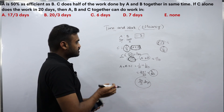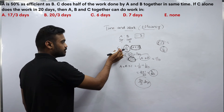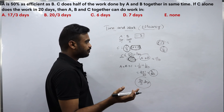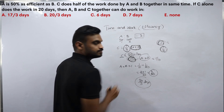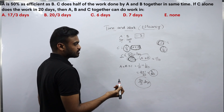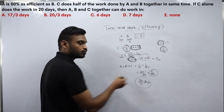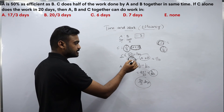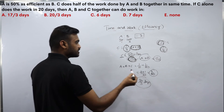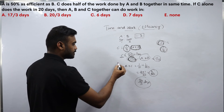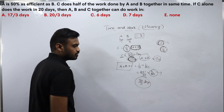To recap Problem 5: C completes half the work in the same time A plus B complete the whole work. C takes 20 days total, so 10 days for half. Therefore A plus B complete the whole work in 10 days. A plus B's efficiency is 1/10, C's efficiency is 1/20. Adding: 1/10 + 1/20 = 3/20. So total time for A, B and C together is 20/3 days.